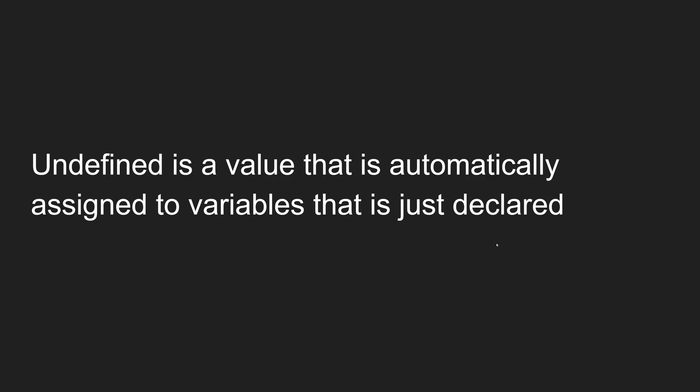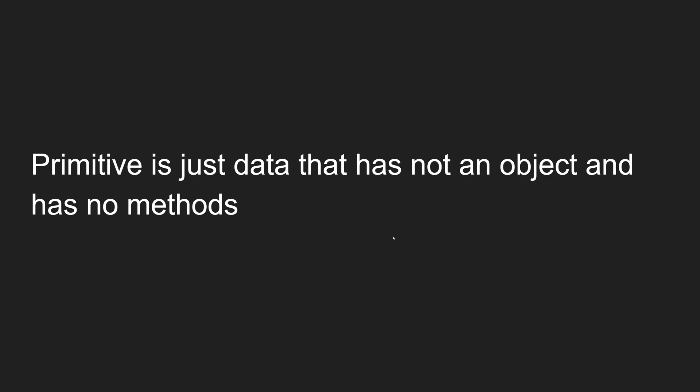I'll show you a practical example for clarity. We've established that undefined is a primitive data type. A primitive is simply data that is not an object and has no methods — that is the definition of a primitive data type.